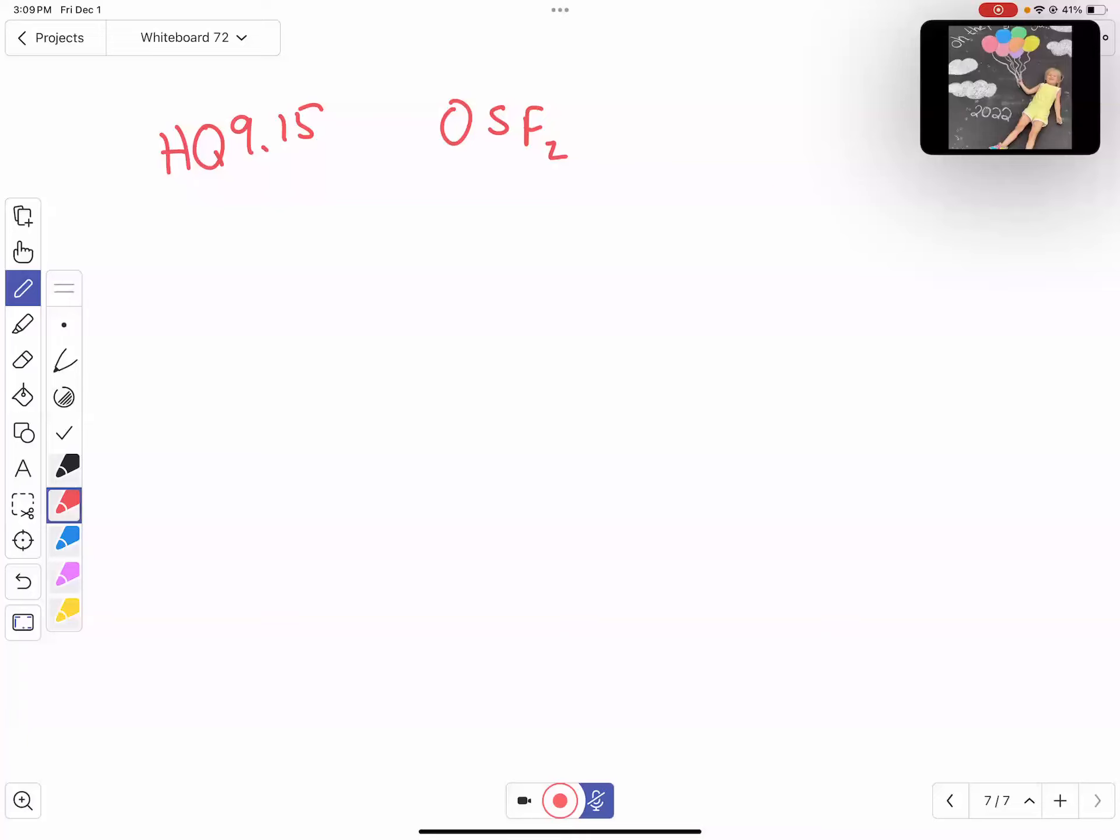And so in this case, oxygen has six electrons, sulfur also has six electrons, and then I've got two fluorines. So there's 14 electrons. So we're looking at 26 total valence electrons that we have to assign.